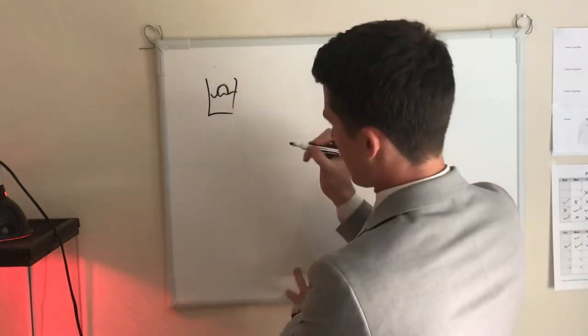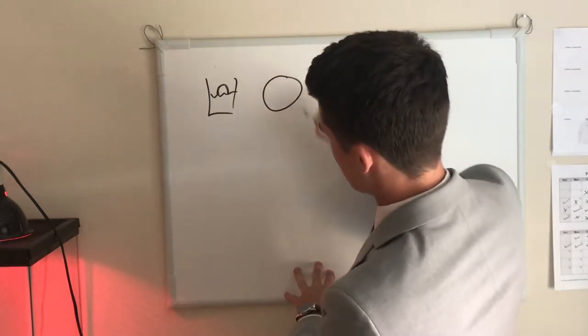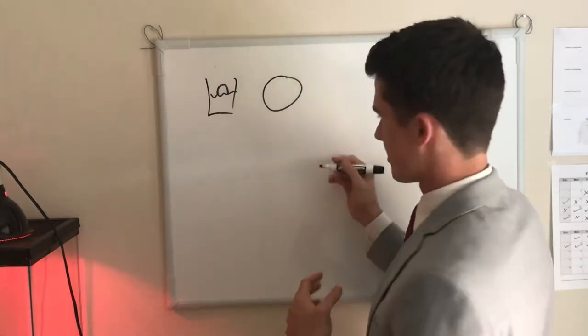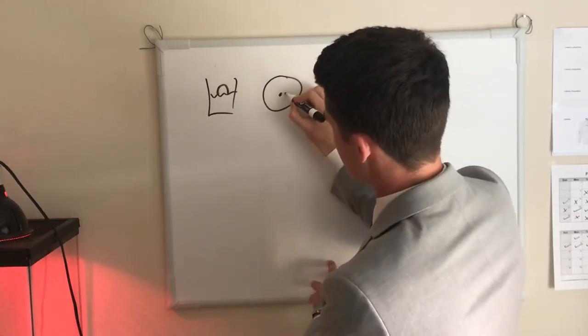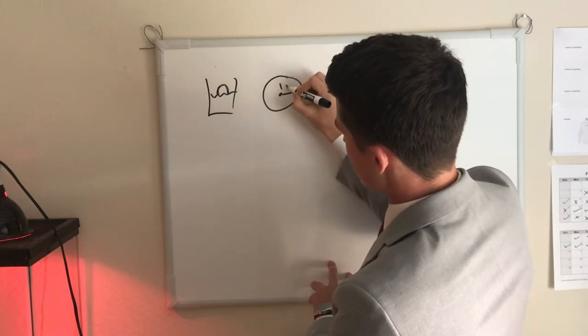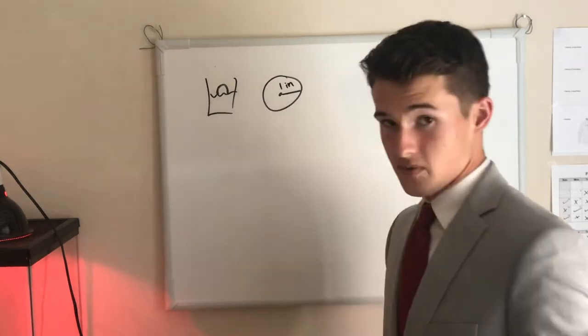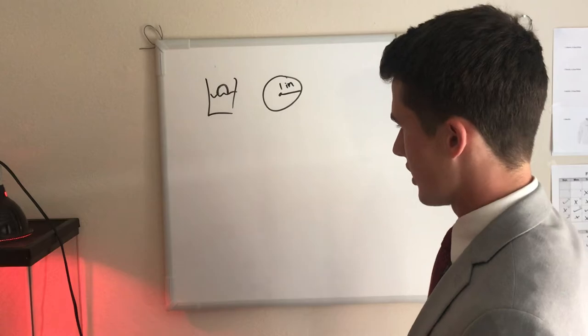Now, the dimensions of the cracker are this: it's a perfect circle, right? Perfect circle, pardon my drawing skills. And the radius of this perfect circle is one inch, okay? Follow me? Perfect circle, radius is one inch.